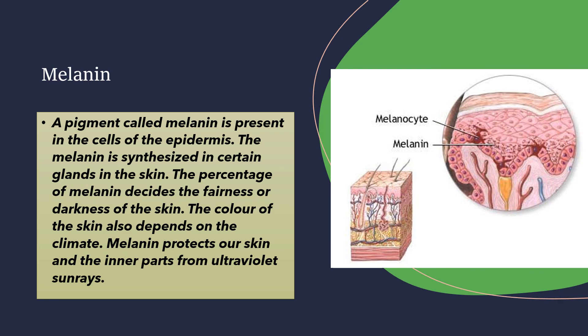The color of the skin also depends on the climate around us. Melanin protects our skin and the inner parts from ultraviolet sun rays. Since a person's skin tone — whether dark or fair — depends on the amount of melanin in their body, which is a matter of science, we should never make fun of anyone based on their skin color. Melanin is a very important substance that protects us from the sun's ultraviolet rays.